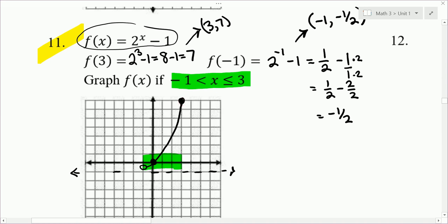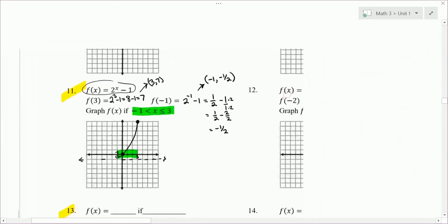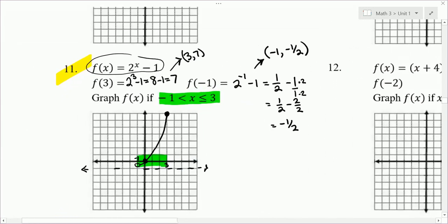And then I need to point out one more thing. Notice it's less than or equal to 3, so I color it in at the point above 3. Whereas it's just, x is just greater than negative 1, so I open circle above the negative 1. The domain goes from negative 1 to 3. Notice parentheses where it's not equal and bracket where it is equal. The range, negative 1 half to 7. Again, parentheses and bracket.